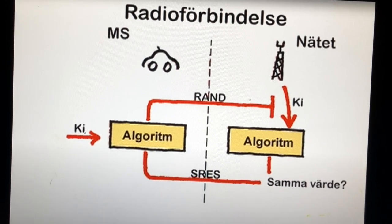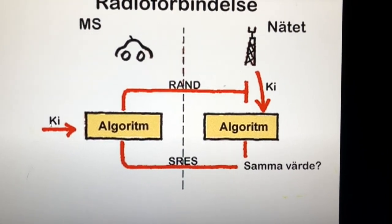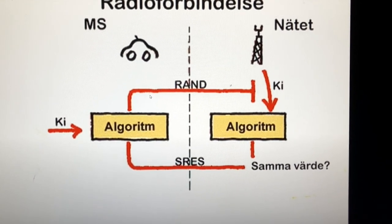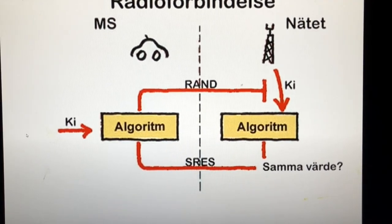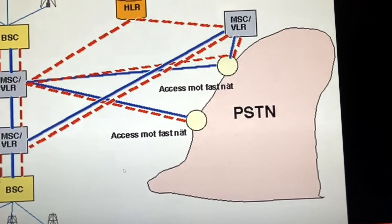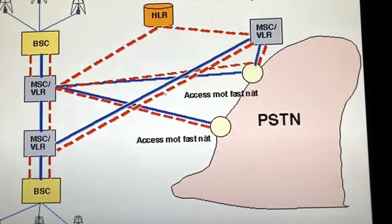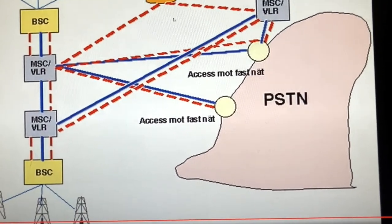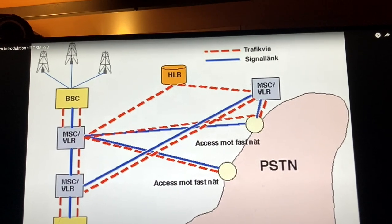The random number plus KI are used to calculate a KC — the actual session key used in that session. Every time you reconnect, you get a new random number and a new KC, but KI is always the same and is stored in the authentication center and on the SIM card. There is also the PSTN — the public switched telephone network — the old telephone network that existed before mobile phones, from which you can still call a mobile phone. The switching happens through the MSC, VLR, HLR, and BSC — the base station controller — and then the BTSs are the transceivers.